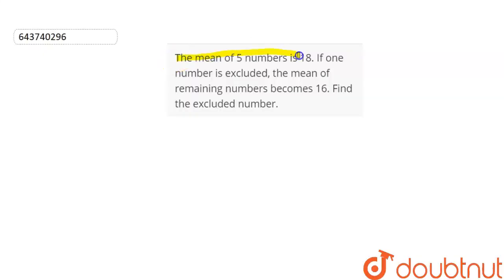The mean of five numbers is 18. If one of them is excluded, the mean of remaining becomes 16. Find the excluded number.